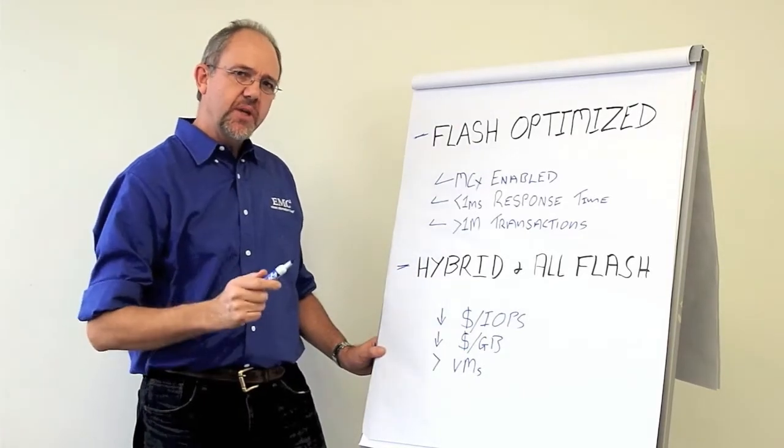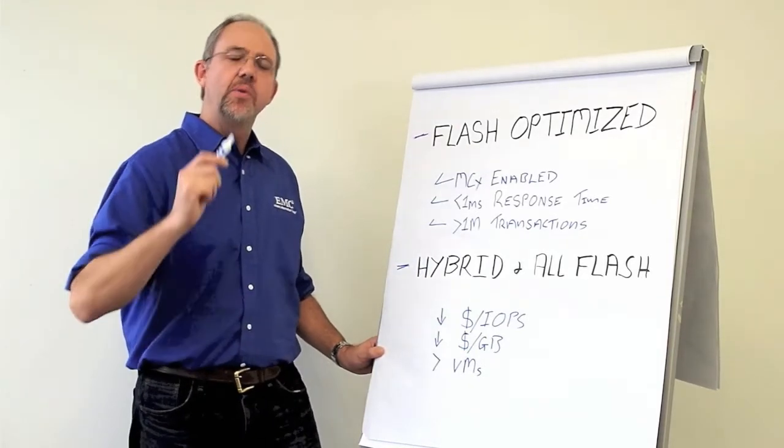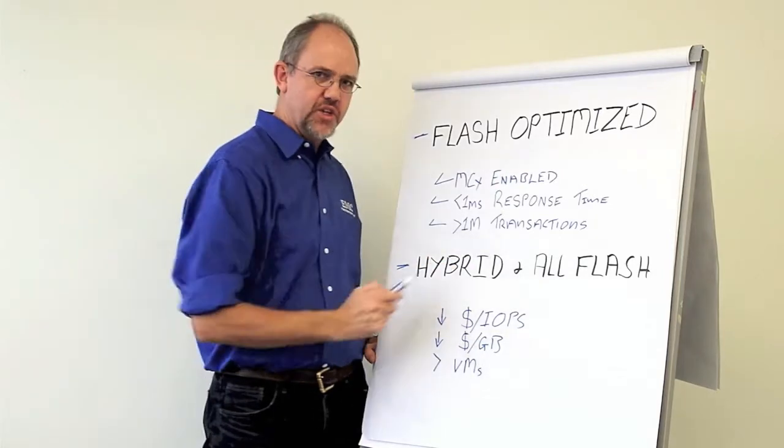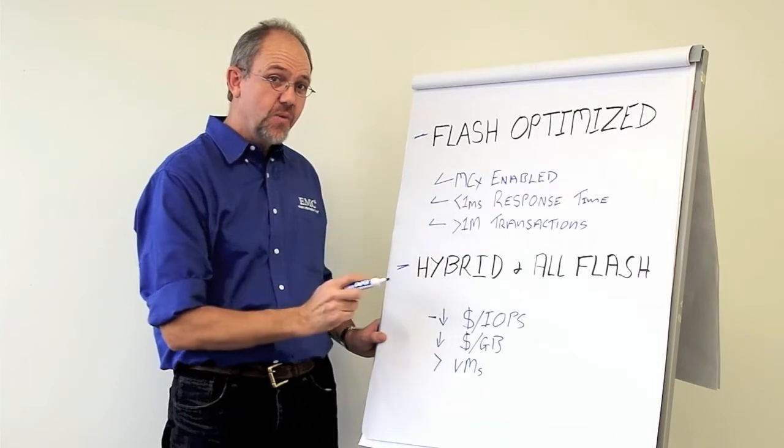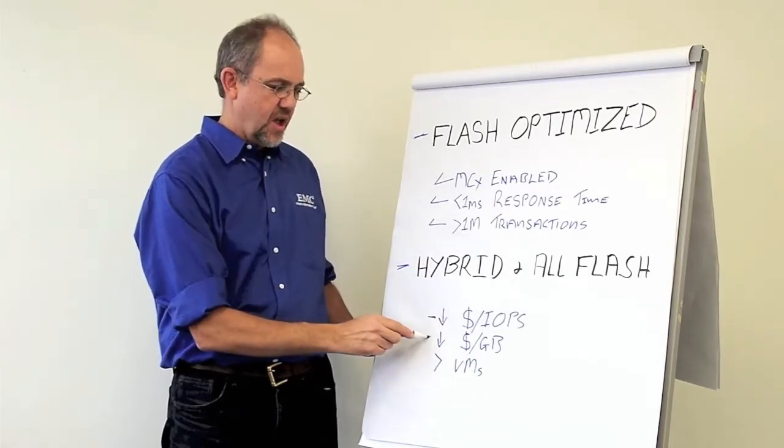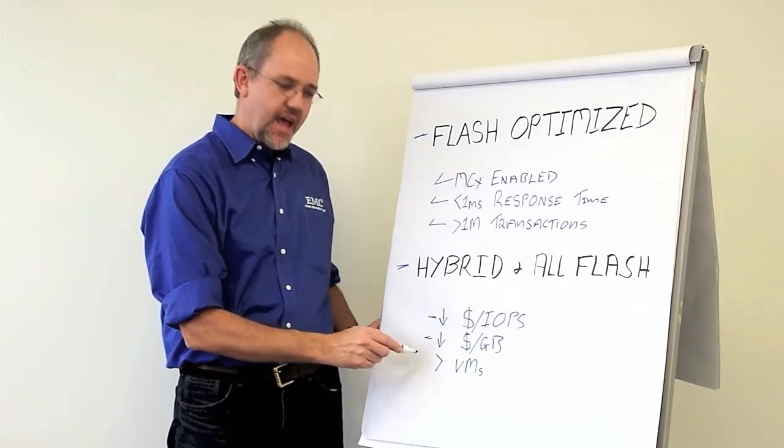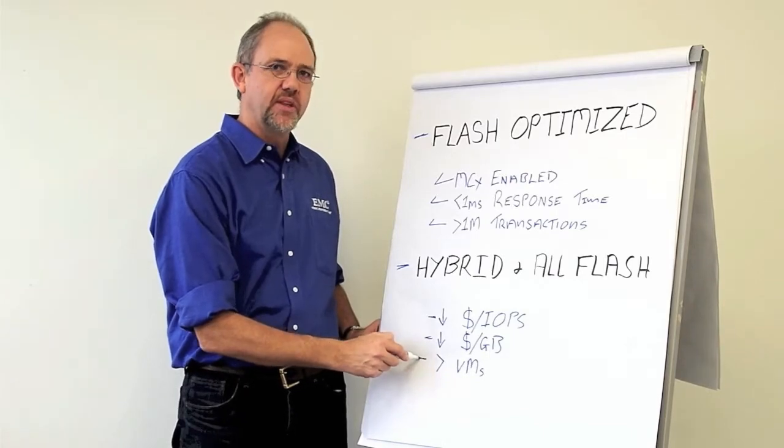The VNX 2 is a typical hybrid array, but we also offer it in an all-flash configuration. Why is all of this important? You get lowest dollar per IOPS, lowest dollar per gigabyte, and the most VMs supported in the environment.